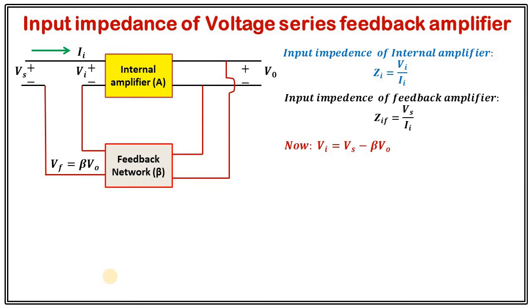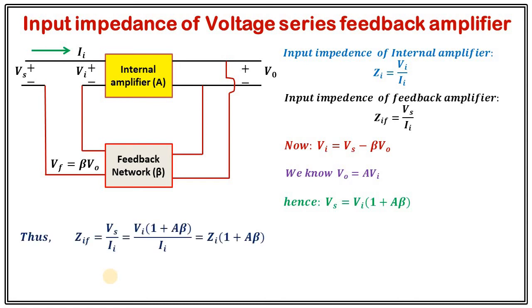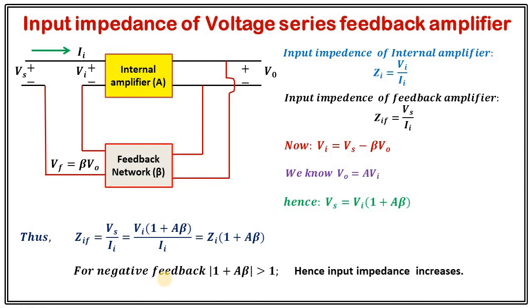βV0 is the feedback signal, and the negative sign accounts for negative feedback. We also know that for an internal amplifier with gain A, V output equals A times V input. Using this relation, we can write VS in terms of Vi: VS equals Vi times (1 plus Aβ). Substituting the value of VS into ZIF — the input impedance of the feedback amplifier — and simplifying, we find that ZIF equals the input impedance of the internal amplifier times (1 plus Aβ). Since 1 plus Aβ is greater than 1 for negative feedback, input impedance increases in the voltage series feedback amplifier topology.